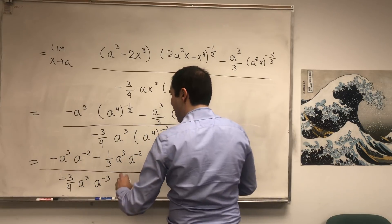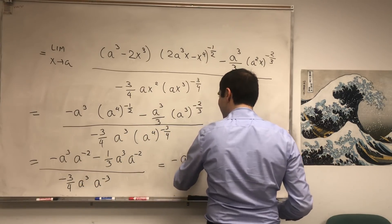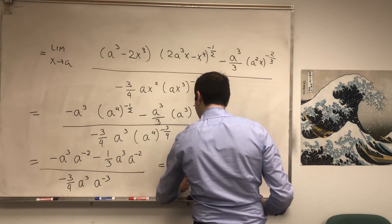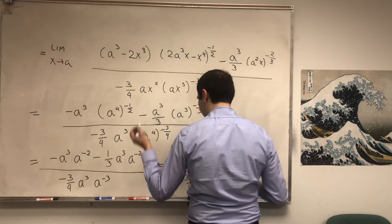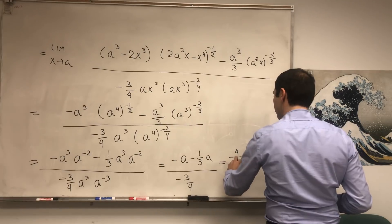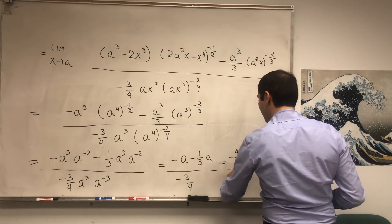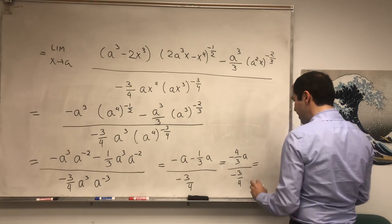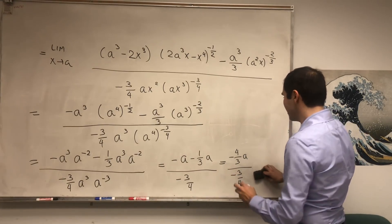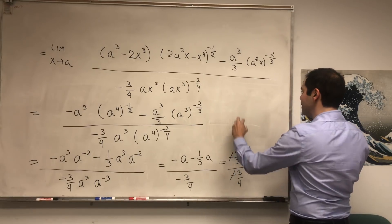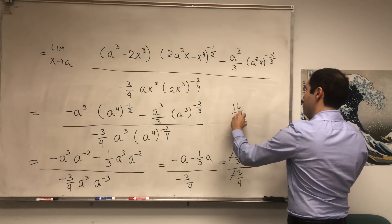It's minus a minus one-third a over minus three-quarters times one. And that becomes minus four-thirds a, and then minus three-quarters. And in the end, so you think it simplifies, but it doesn't, it actually becomes sixteen ninths a.